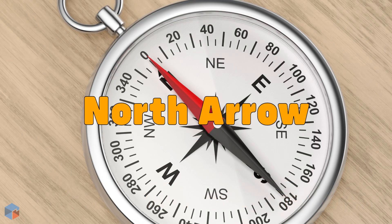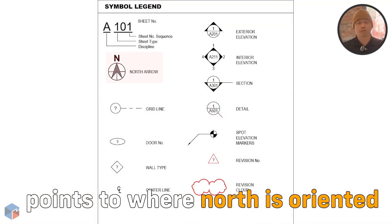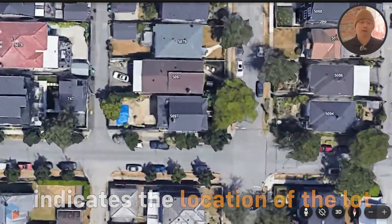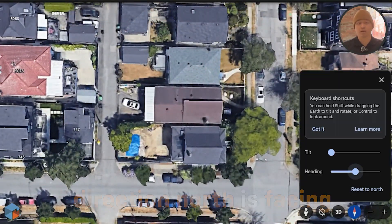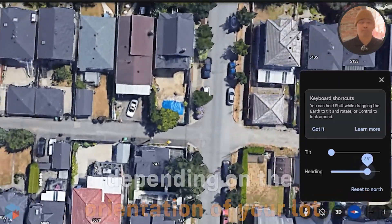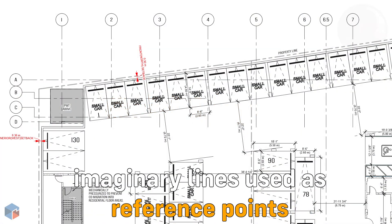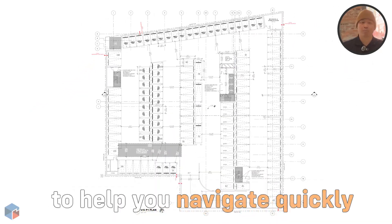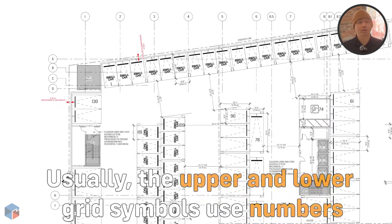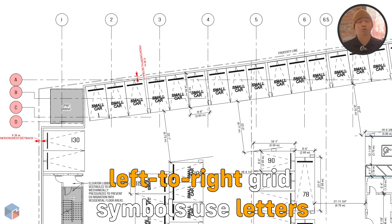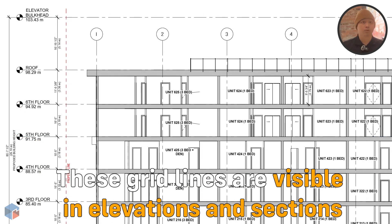Next, we have the north arrow symbol, which points to where north is oriented. The symbol doesn't always face upwards — it indicates the location of the lot and the direction north is facing. The north arrow can be rotated depending on the orientation of your lot. Then we have grid lines. These are imaginary lines used as reference points in the drawings to help you navigate quickly. Usually in the floor plan, the upper and lower grid symbols use numbers, while the left to right grid symbols use letters. You can also see these grid lines in elevations and sections of the architectural drawings.